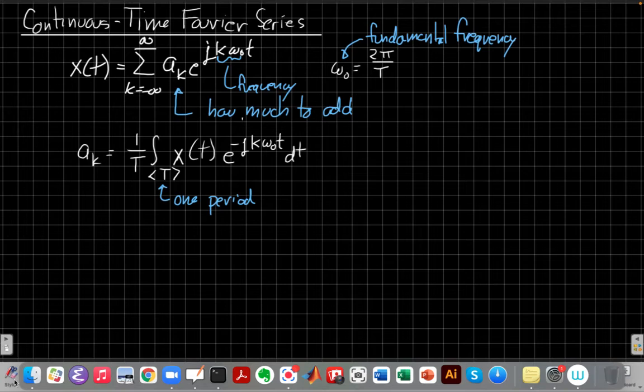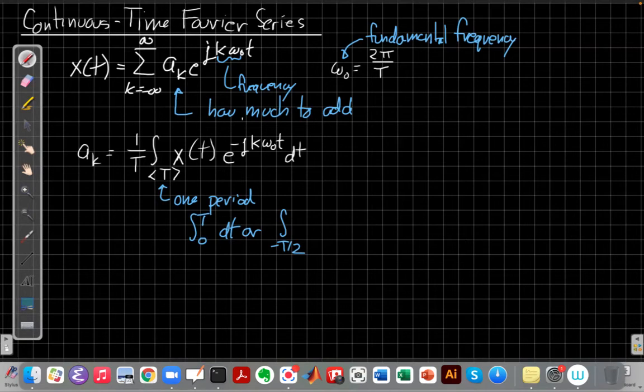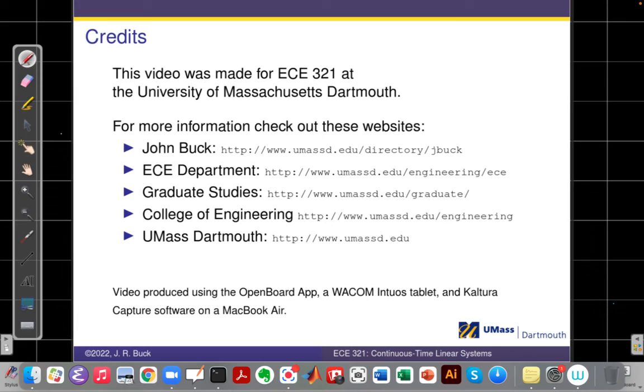Okay? So again, actually I should have filled this in earlier. The 1 period can be an integral from 0 to T. Or another common choice is to go from minus T over 2 to plus T over 2. Particularly if we have a waveform that has even or odd symmetry centered at the origin, the symmetric choice can be a very helpful one. Otherwise, we usually just take the first period starting from 0.